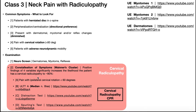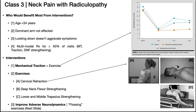Wainner's cluster is pretty useful for ruling up a radiculopathy associated with neck pain. If you determine that a patient falls into class three — neck pain with radiculopathy — who would benefit most from interventions? There are four things that increase the likelihood someone will benefit from treatment.